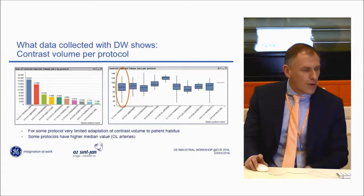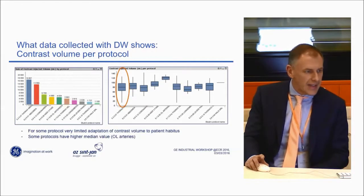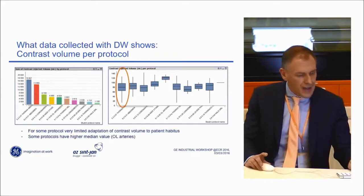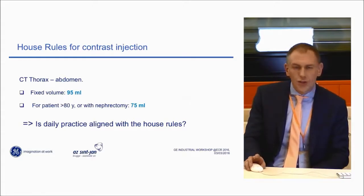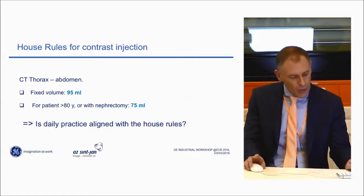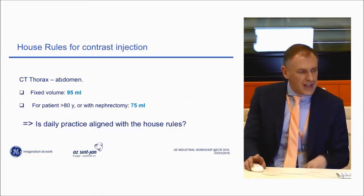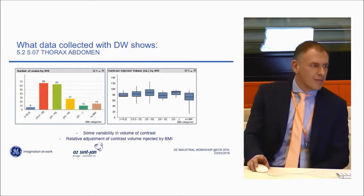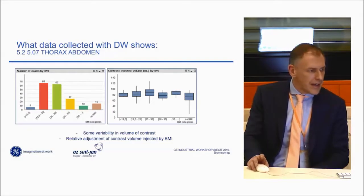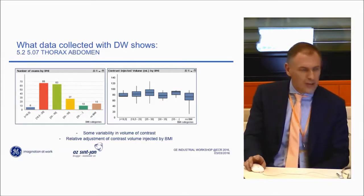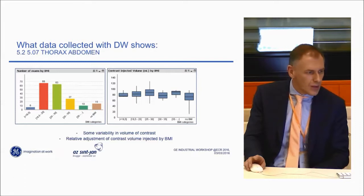Let's look at one specific protocol: the venous phase CT of thorax and abdomen, which is very frequently used. The house rule is a fixed volume of 95 ml, but for patients older than 80 years or after nephrectomy, this should be lowered to 75 ml. With ContrastWatch, we can check if our daily practice is aligned with these house rules. We collected data on a group of patients with all different BMIs — low, normal, slightly higher, very high — and some with no BMI because the technician didn't enter the patient's weight and height.